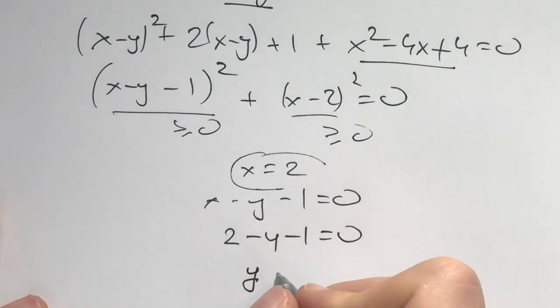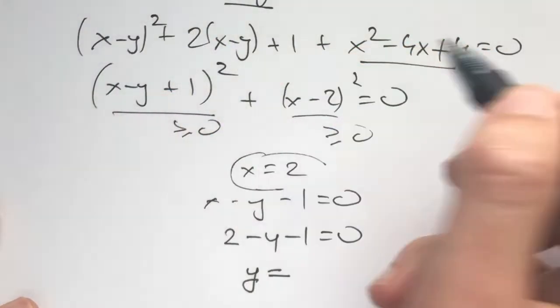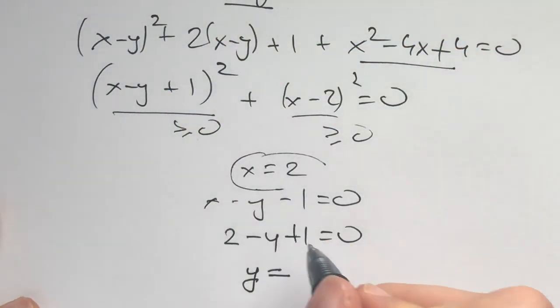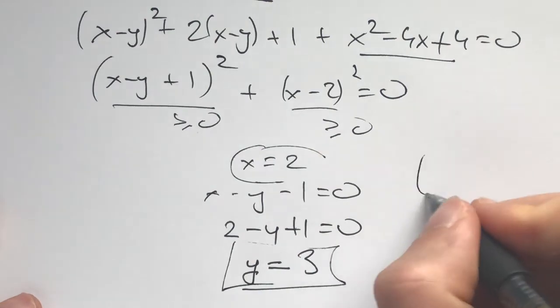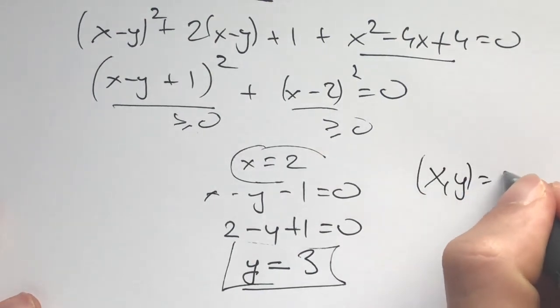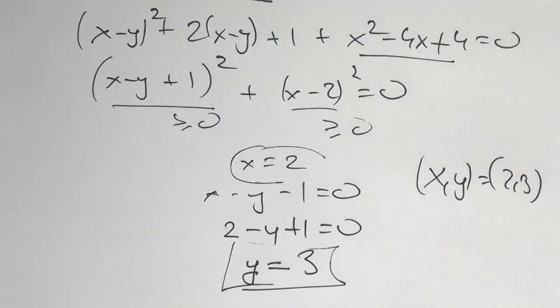Actually my bad. This is plus 1 because I'm adding stuff here. I made a mistake so this is plus 1. So y equals 3. And this is the only solution: x and y equaling 2 and 3. This would be good enough to solve the problem.